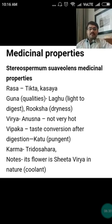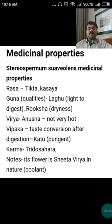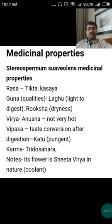The medicinal properties include: Rasa — Tikta (bitter) and Kashaya (astringent); Guna — Laghu (light) and Ruksha (dry); Veerya — Anushna, meaning it is not very hot in potency; Vipak is Katu; and Karma is Tridoshahara. One important point: the flower is Sita Veerya (cold potency), even though the drug overall is described as Anushna.